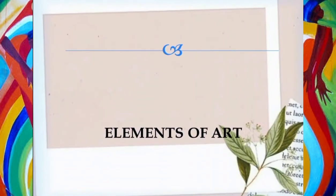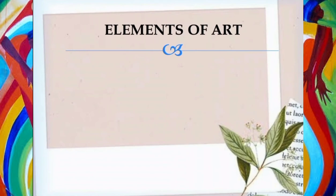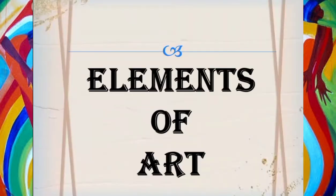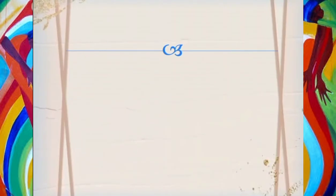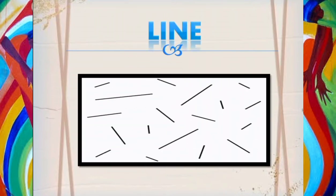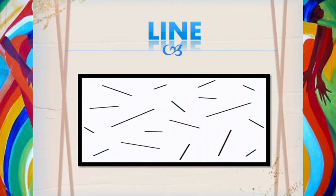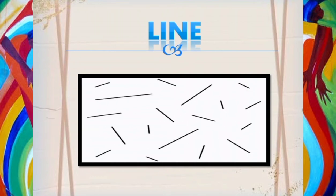The elements of art are the visual tools that the artist uses to create a composition. Here are the elements of art. A line is an element of art — it is a mark made upon a surface. In order to be a line, the mark's length must be longer than its width.